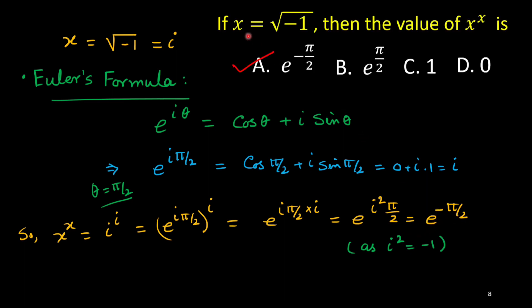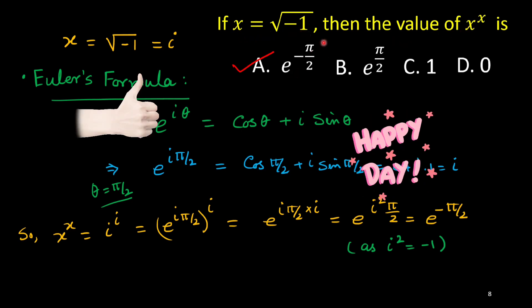So for this problem, when x equals square root of minus 1, the value of x to the power x will be e to the power minus pi by 2. Choice A is correct. Thanks for watching.